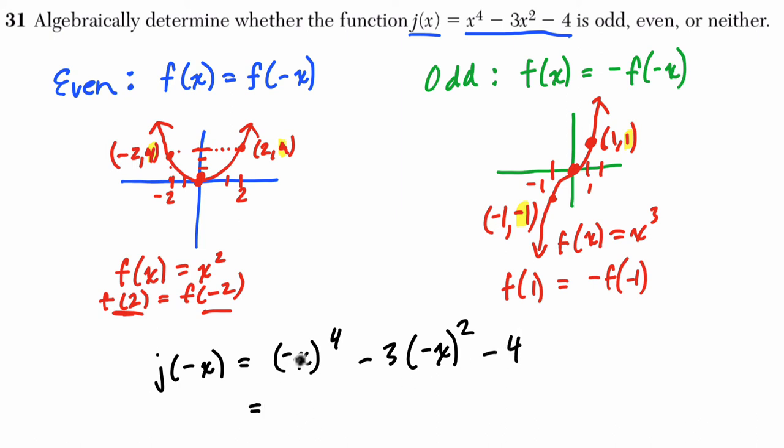Well, negative x to the fourth, that's just x to the fourth. Those four negative x's multiplied to a positive x. Negative x squared is x squared, so three x squared minus four. And look at that. We get the exact same thing as before. So this is what j of negative x equals, but that also equals j of x. So I would make a statement. Since j of x equals j of negative x, we know it's an even function.